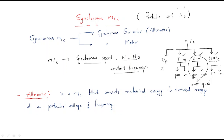Like all electrical machines, synchronous machines are of two types: one is the synchronous generator and the other is the synchronous motor. The synchronous generator takes mechanical power and gives electrical power. The synchronous motor is the opposite — it takes electrical power and gives mechanical power.